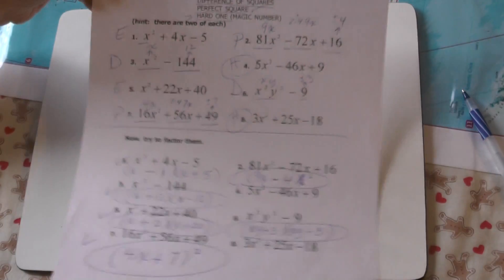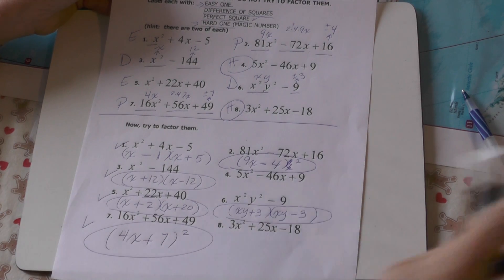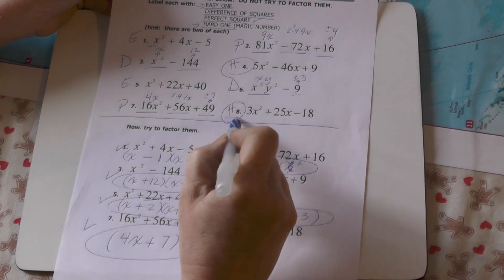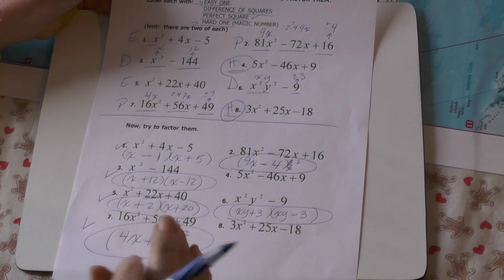Okay, now we're going to do the two hard problems on this hard ones magic number page that we already did six out of the eight problems for. If you recall, we said number four and number eight were hard, and by the time we're done, they're not going to be that hard.